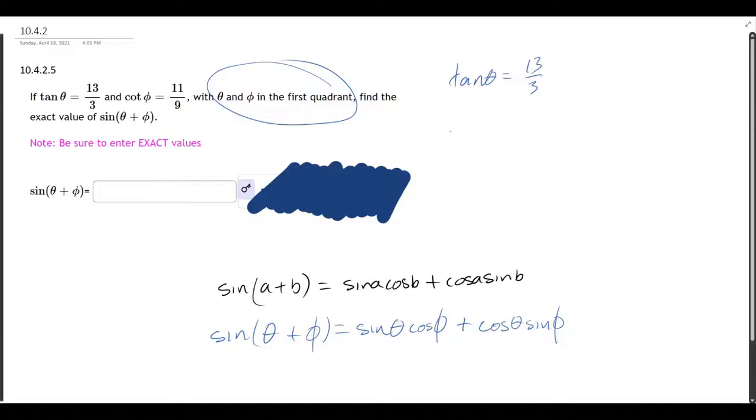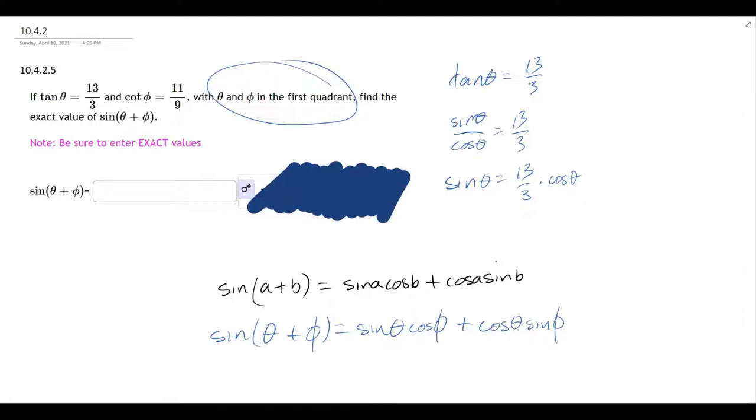Now from here, I could write tangent as sine over cosine. However, if we solve for sine, we see that sine is 13 thirds times cosine, but we still don't know what cosine is. How we're going to figure that out, we're going to need to use the Pythagorean identity. And so we have a few choices.